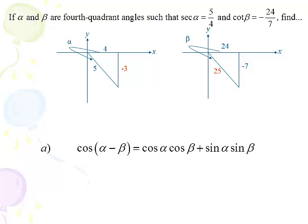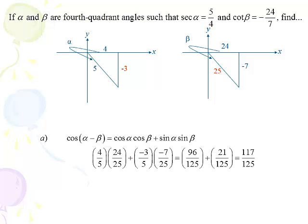To find cosine of alpha minus beta, go to the formula sheet: cosine cosine plus sine sine. Cosine of alpha is 4 fifths, cosine of beta is 24 twenty-fifths, plus sine of alpha negative 3 fifths times sine of beta negative 7 twenty-fifths. After multiplication and addition, the cosine of alpha minus beta is 117 over 125.